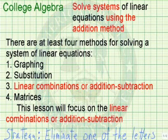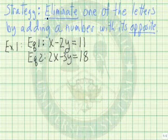In this lesson, we will be focusing on the linear combination or addition subtraction method. Our strategy will be to eliminate one of the letters by adding a number with its opposite.